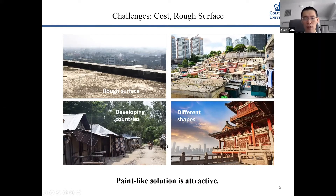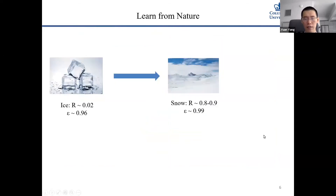Ideally, we want something like a paint — something you can brush as a radiative cooling coating onto an arbitrary shape of building. So how to achieve that? We are actually inspired by nature.